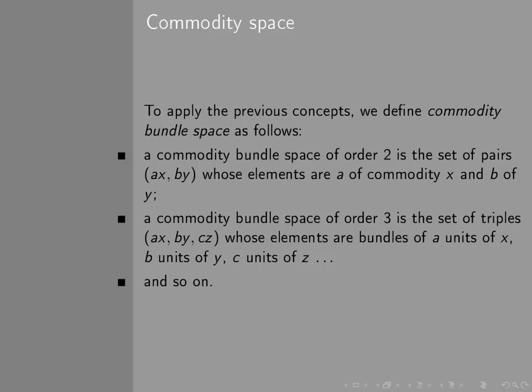In order to apply geometrical concepts to the Law of Value, we define a commodity bundle space as follows. A commodity bundle of order 2 is a set of pairs A of X and B of Y, whose elements are A of commodity X and B of commodity Y. A commodity bundle space of order 3 is a triple A of X, B of Y, C of Z, etc. And so you can go on to commodity bundle spaces of arbitrary dimensions. I'm not saying these are vector spaces yet. These kinds of distinctions between vector spaces and bundles are the sorts of things you make if you're a computer scientist and you want to distinguish between types.